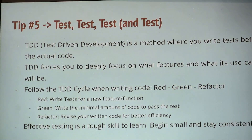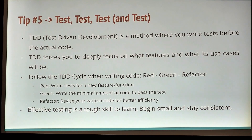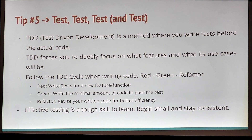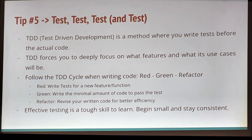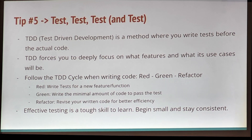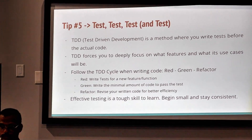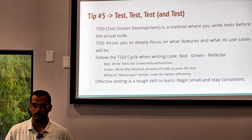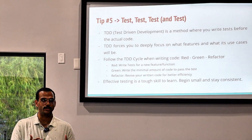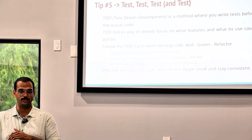Fifth tip: test, test, test, and test. Testing is extremely important. Most companies nowadays tend to use a testing strategy called test-driven development, where you actually write the tests for the features you're thinking of before writing the code. The way it generally works is three cycles — red, green, and refactor. In the red phase, you know what features you want, you write a list of tests needed, and you write the minimum amount of code needed to pass those tests, keeping your code efficient.